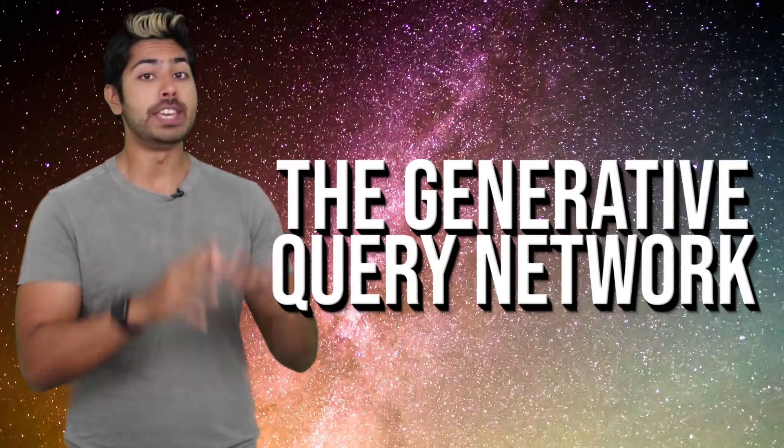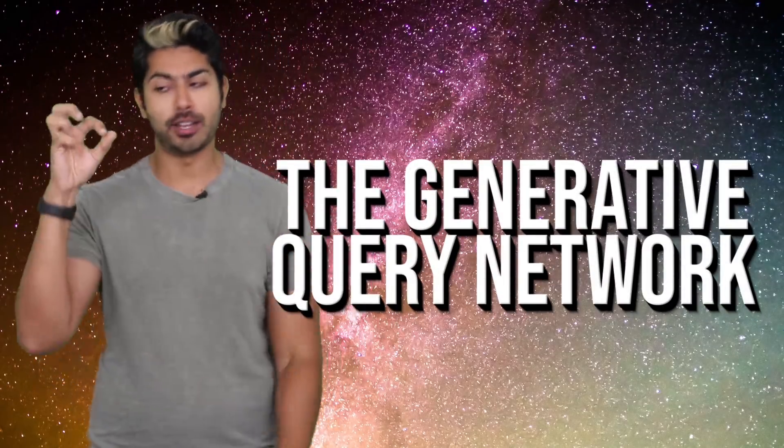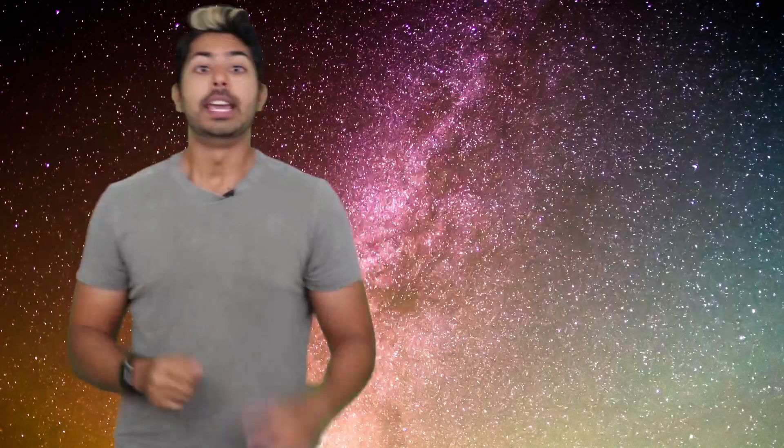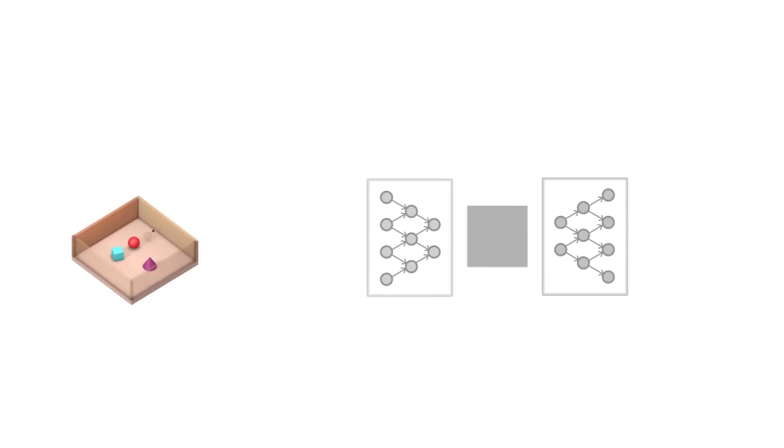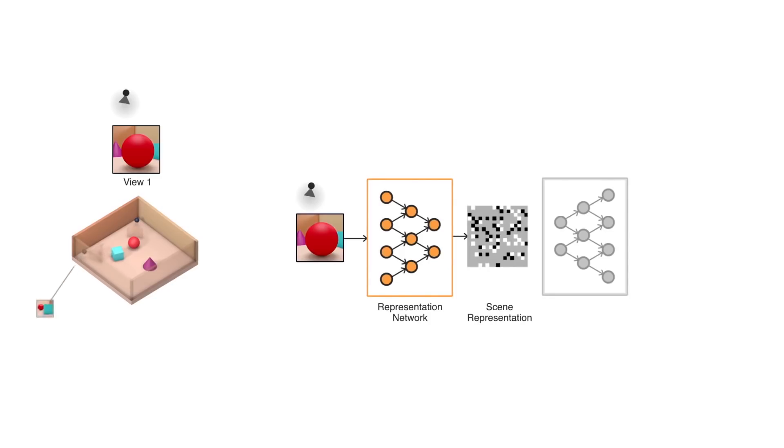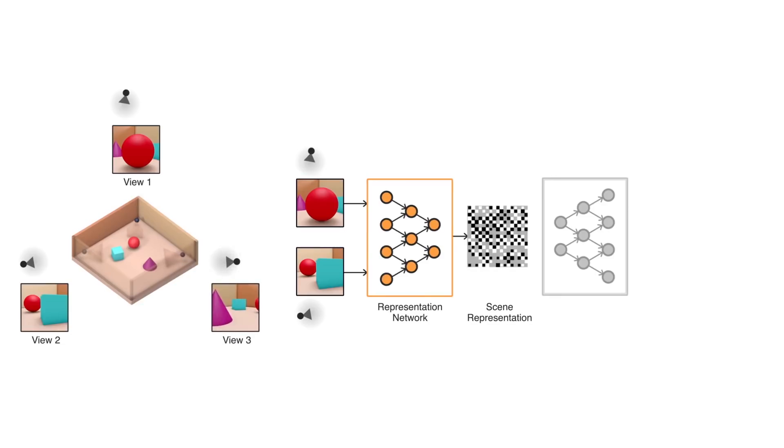They call their AI the Generative Query Network or GQN. It consists of two parts, a representation network and a generation network. The representation network takes as input what the agent observes inside of the 3D environment, essentially a 2D image frame. The representation network then outputs a representation of that input. The idea is that this representation will capture the most important elements of the scene, like the position of objects, colors, and the room layout, in a compressed way. It will learn to detect those features. They aren't hand-coded.